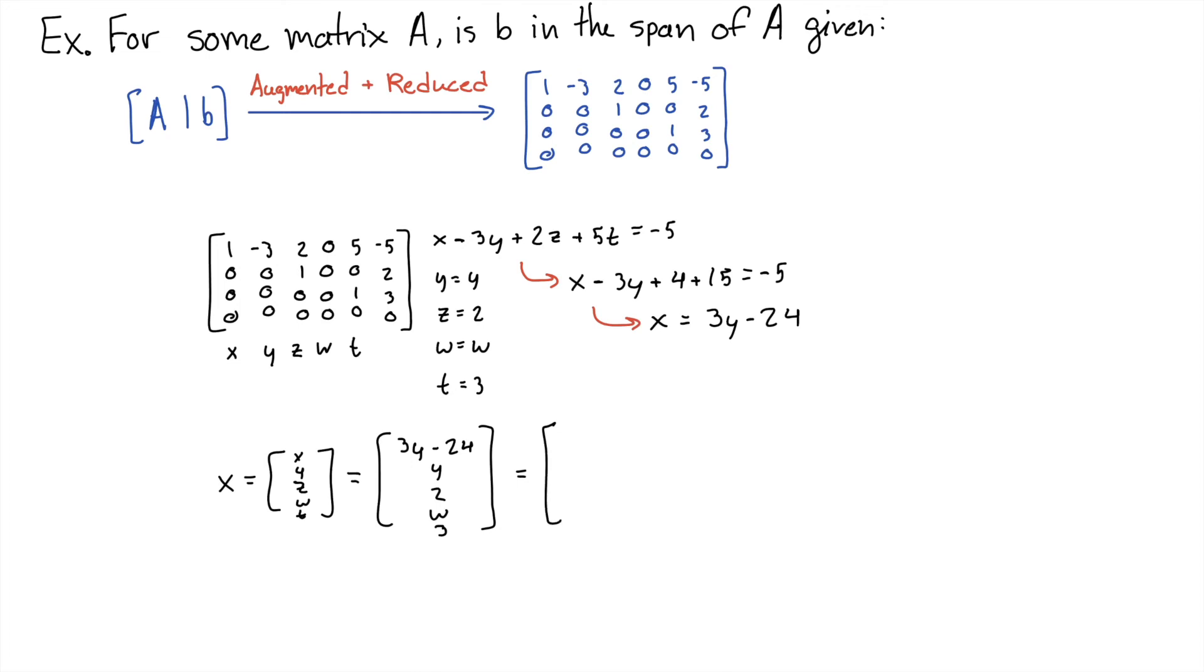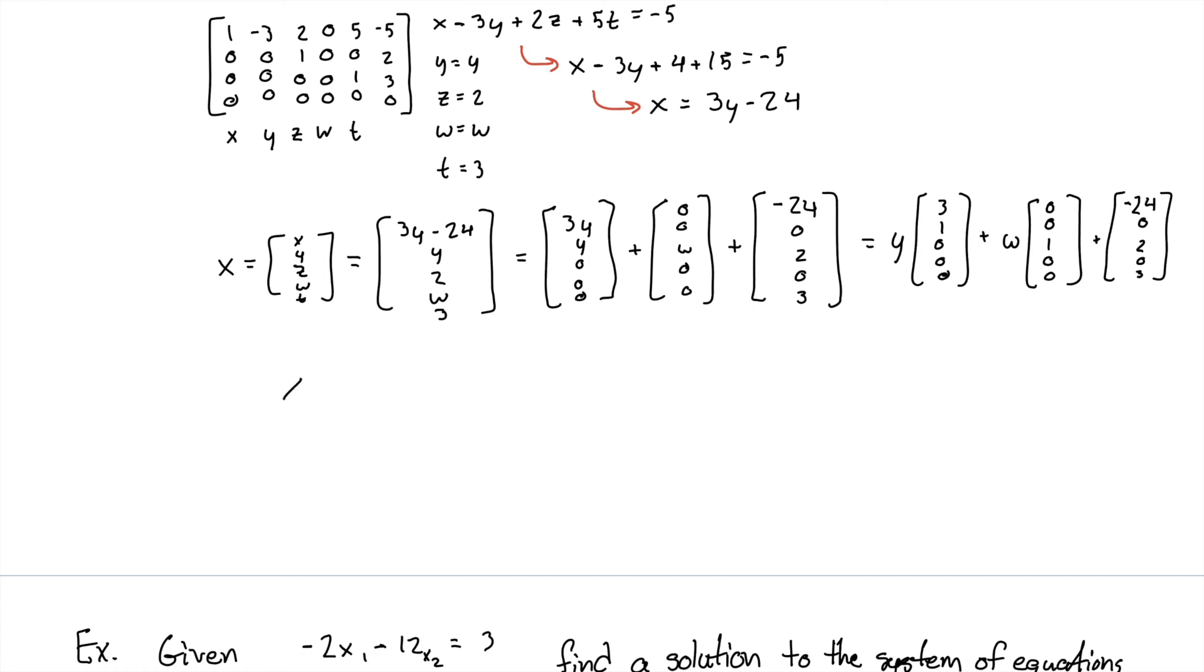Further simplifying, we'll get the Y's by themselves, then the W's by themselves, and lastly, the numbers without variables. Then we want to pull out the variables. So we get X equals Y times the vector 3, 1, 0, 0, 0 plus W times vector 0, 0, 1, 0, 0 plus vector negative 24, 0, 2, 0, 3. And this is our answer.